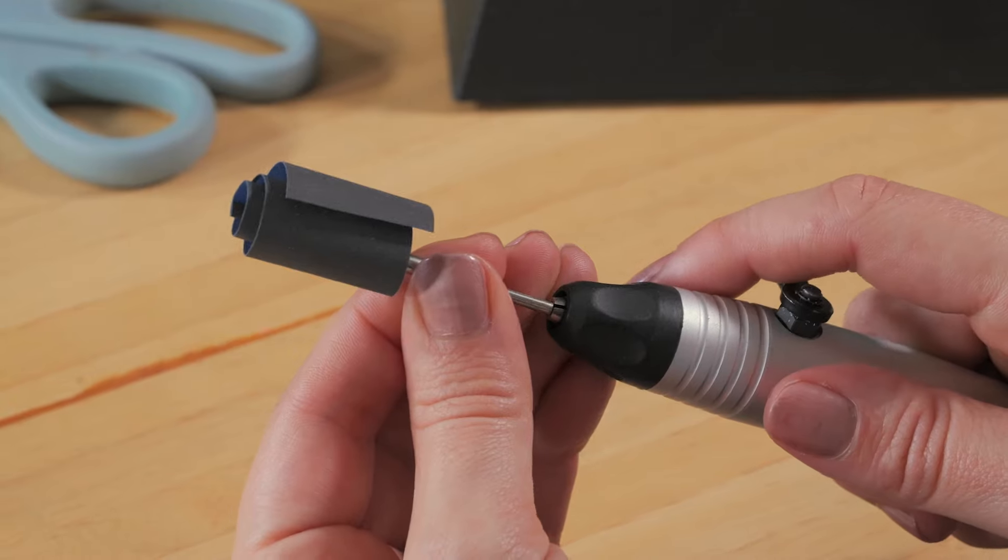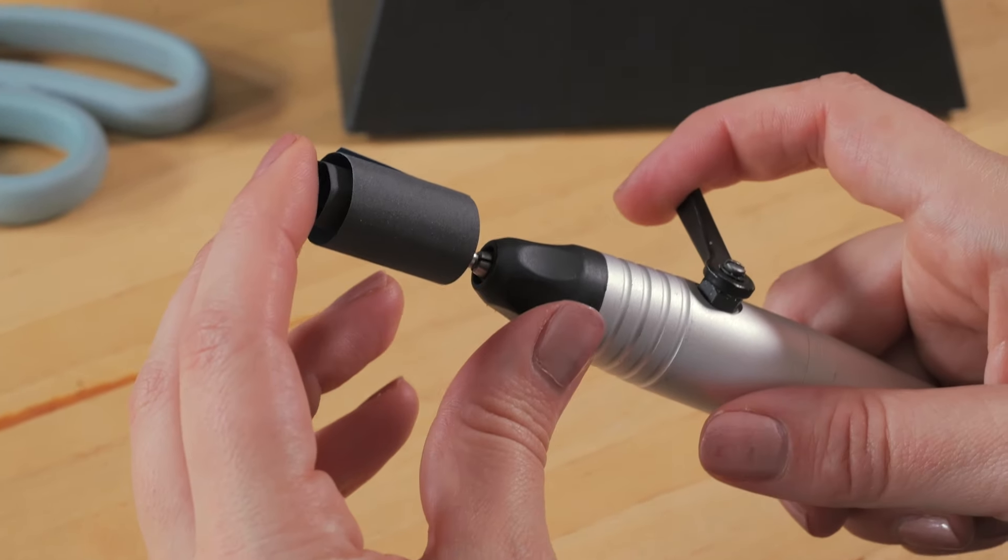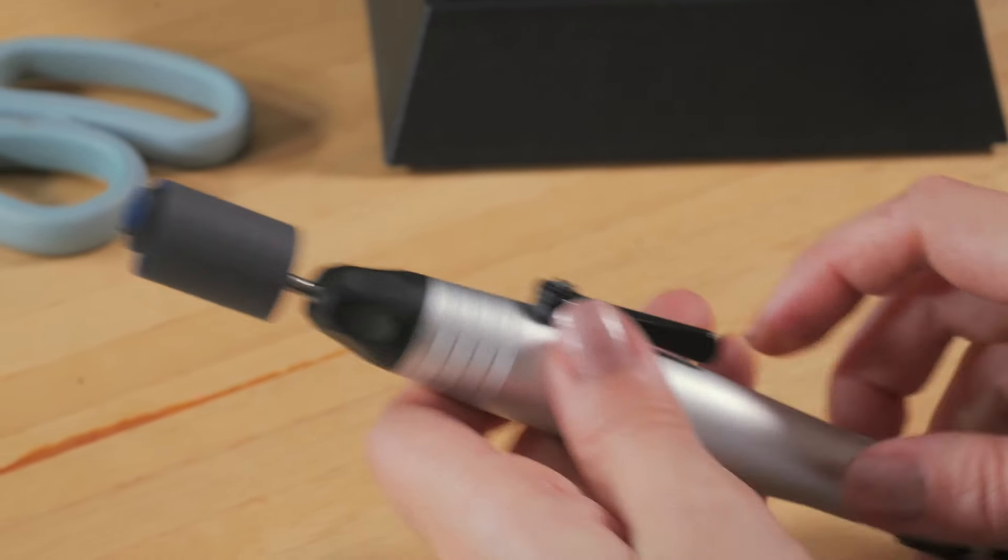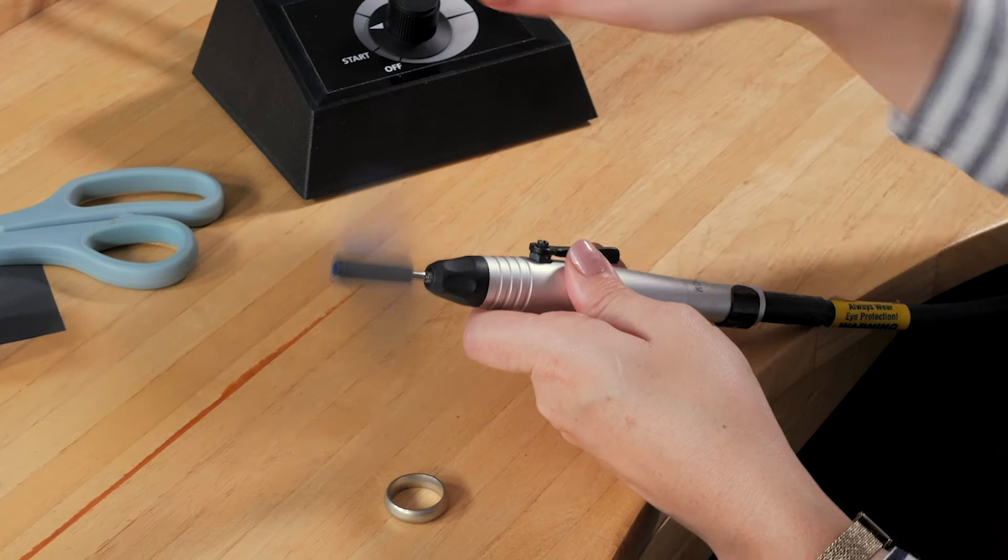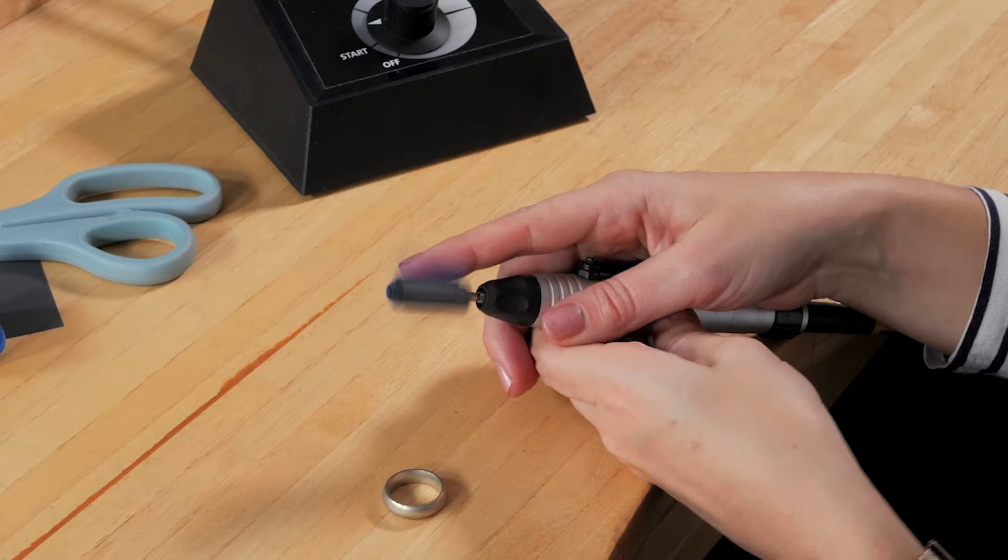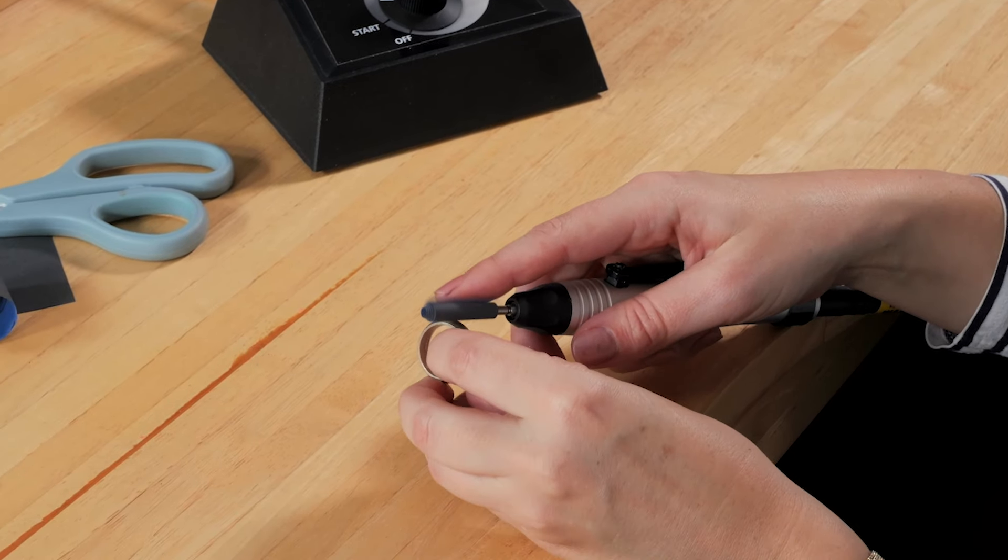Then I'm just going to pop it into my flex shaft. I'm using a Fordham quick release but you can use a Dremel, you can use anything. I'm going to put it on quite a high speed - it won't hurt you - and then I can go ahead and do my sanding.